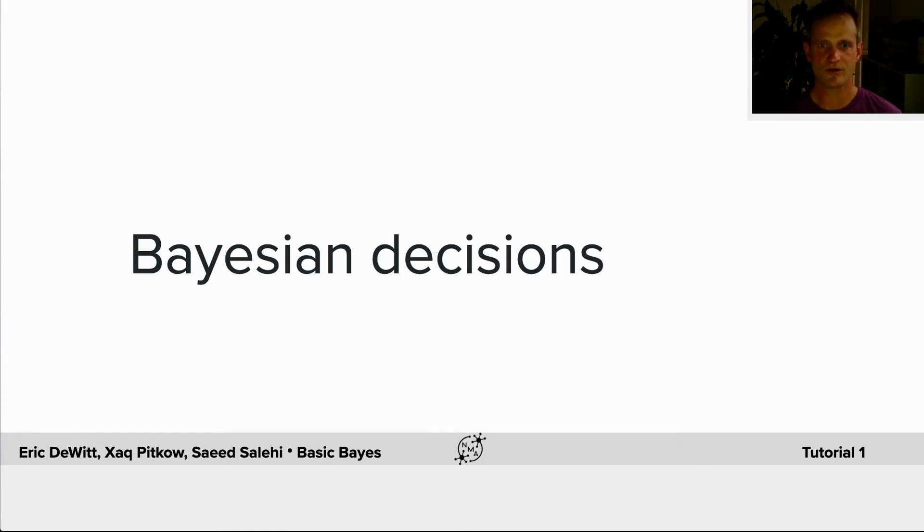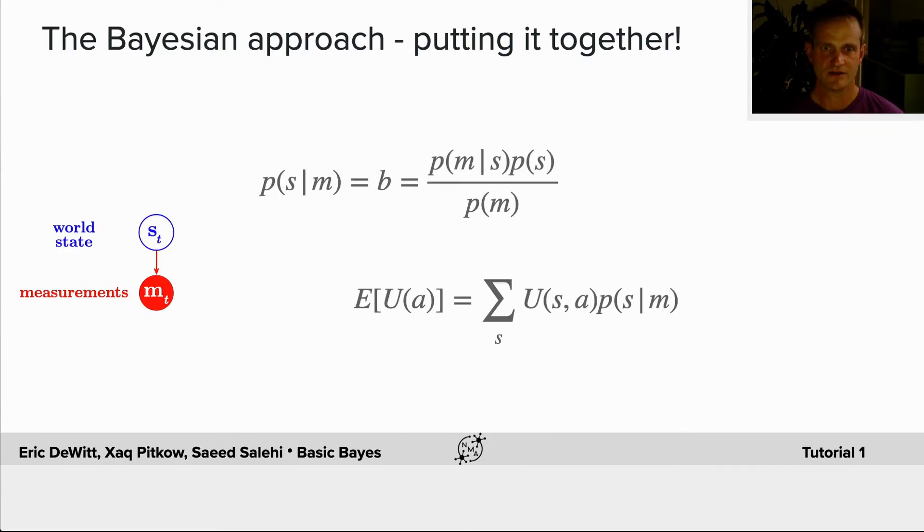We're now going to put everything we've learned so far today together to make Bayesian decisions. We'll use our posterior or subjective belief and combine the utility of the actions we're going to consider to form an expected utility. That is the sum of the utilities given the posterior probability of the state given our measurement.